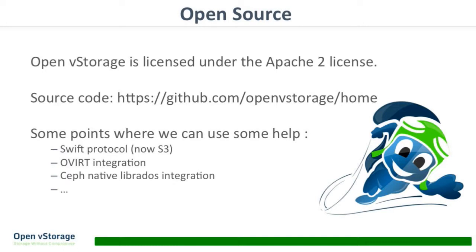We're open source, licensed under the Apache 2 license. You can get our code on GitHub. There are places where we can use help — for example, we're currently using the S3 protocol when storing data on Swift, but we'd like to use the native Swift protocol. We could also use OVIRT integration and native Librados integration. So there are some areas where our project could use contributions.